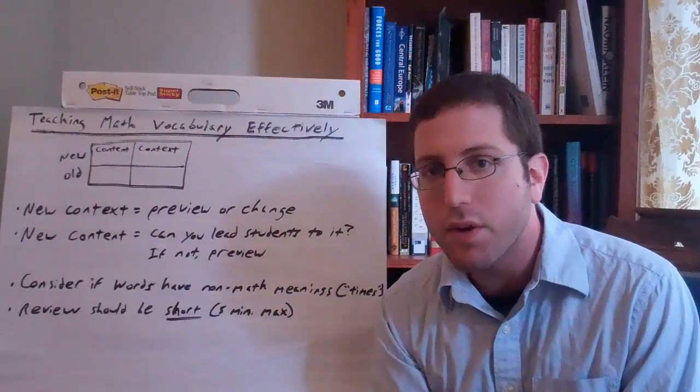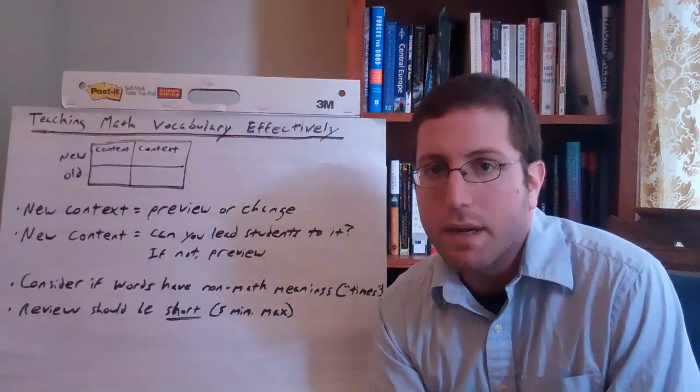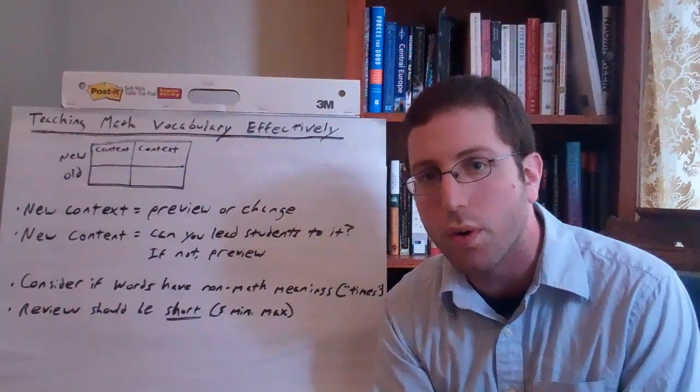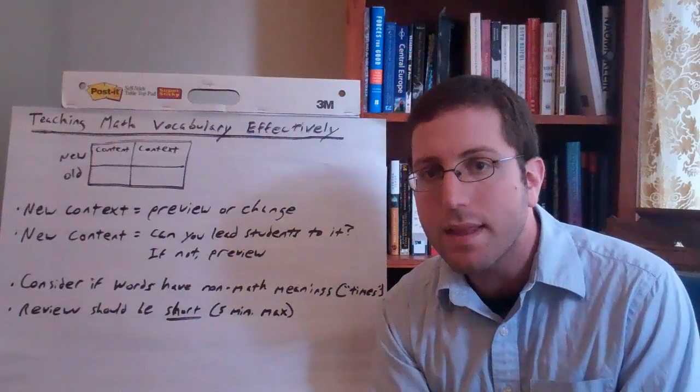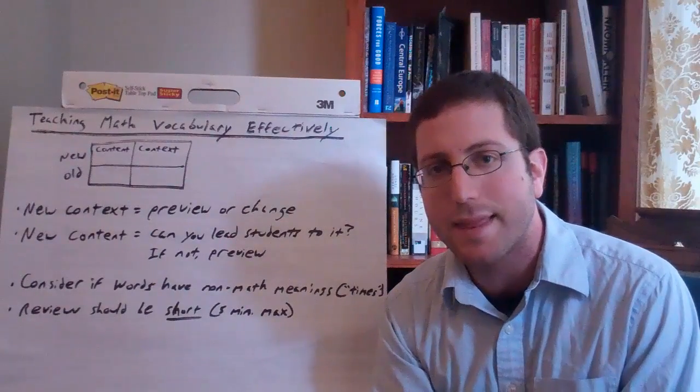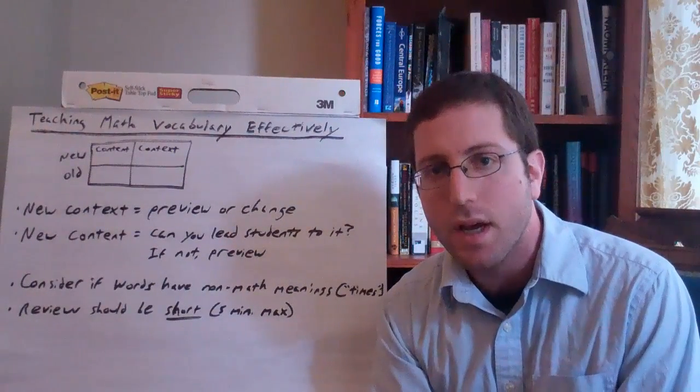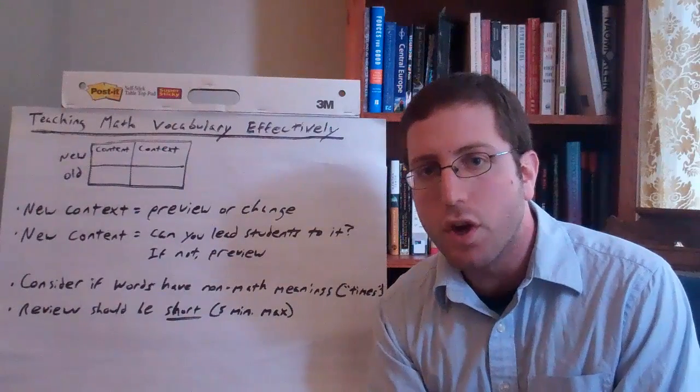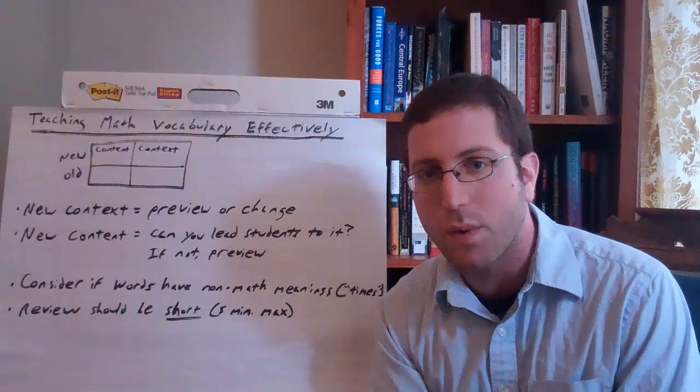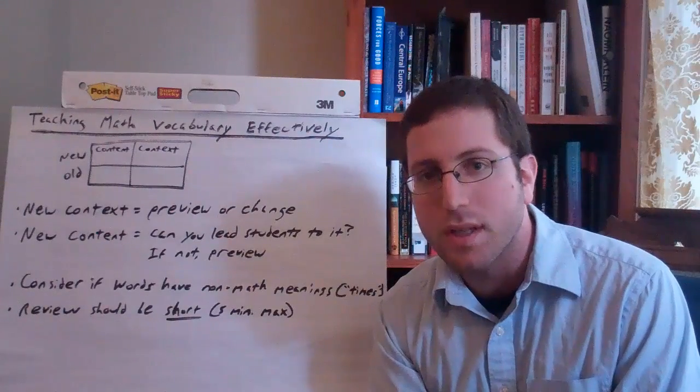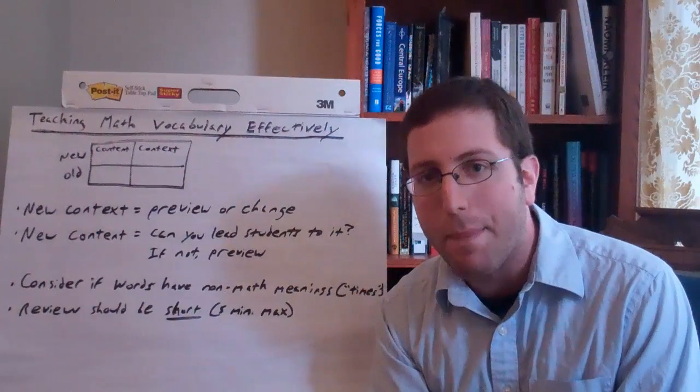So they give an example of if you were teaching perimeter, a common perimeter problem that might appear in a textbook or that you might come up with on your own might involve trying to find the perimeter of a farm. But there are words associated with that that not all students are going to be able to know what they mean if you haven't talked about farms before. So depending on what population you're working with and where you're located geographically, maybe your students wouldn't know words like wheat or crop or acre.